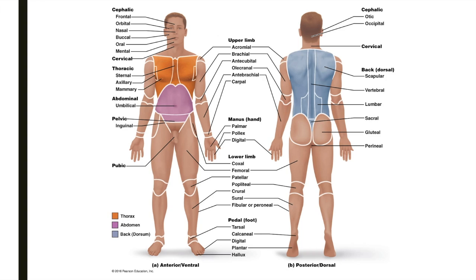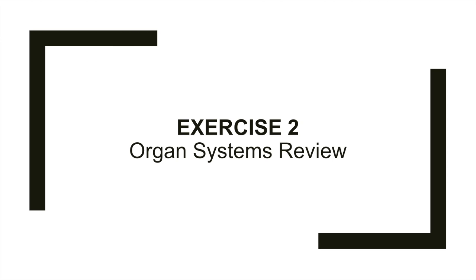All the different terminology introduced in exercise one may seem like a bit much, but this terminology lies at the foundation of anatomy and physiology. Whether you're describing the location of a patient's wound or charting an injection site, you'll continue to use these terms throughout your career as a medical professional. In exercise two, we'll be reviewing different organ systems, the organs within them, and their functions. I won't be spending a lot of time in pre-lab reviewing all the different organs and organ systems, so be sure to read through all of the information found in exercise two.